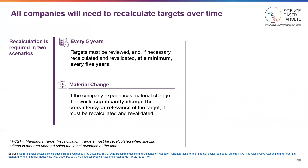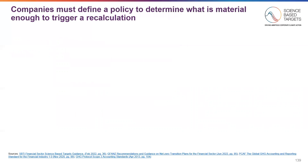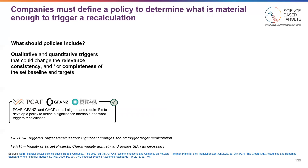All primary ecosystem actors like GFANS, PCAF, and GHGP require or strongly advise a recalculation policy. SBTI recommends qualitative and quantitative triggers that could indicate whether there's a change in relevancy, consistency, or completeness of the set of baseline or targets. As noted, PCAF, GFANS, and GHGP are all aligned on this.